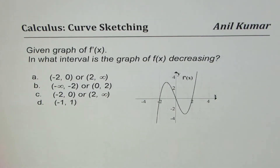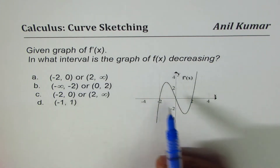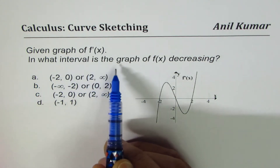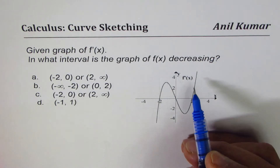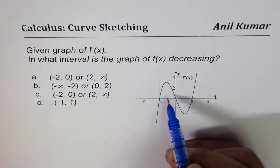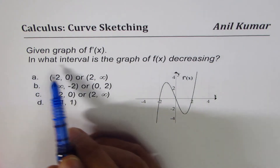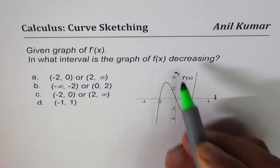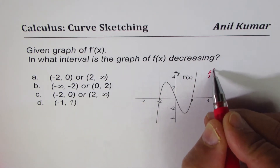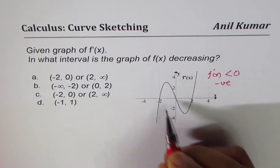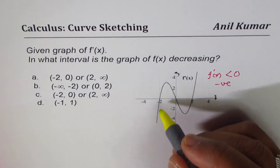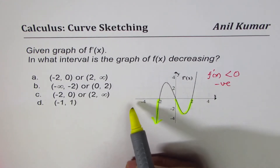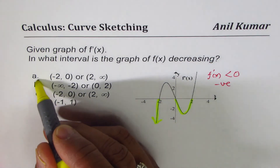Here is the next question: we are again given the graph of f'(x) for the same kind of function. Given the graph of f'(x), in what interval is the graph of f(x) decreasing? We already know the function is quartic. Decreasing means the derivative should be less than zero — negative. The derivative is negative in this part and also in this part, meaning the function is decreasing from minus infinity to minus two, and from zero to two.